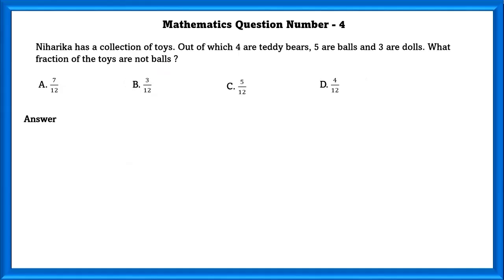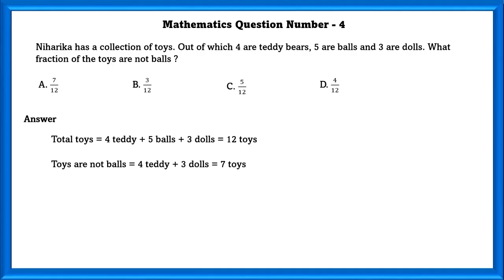Mathematics question number 4. Niharika has a collection of toys, out of which 4 are teddy bears, 5 are balls, and 3 are dolls. What fraction of the toys are not balls? Total toys equals teddies plus balls plus dolls, which equals 12 toys. Total toys that are not balls equals 7. So the fraction of toys that are not balls is 7/12.